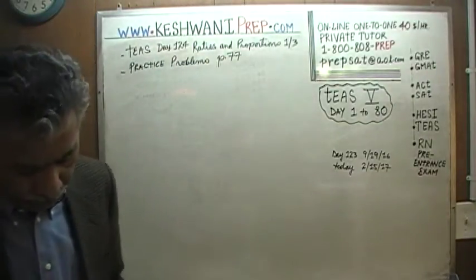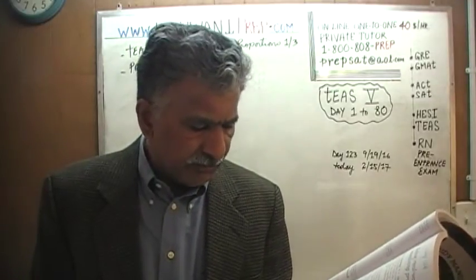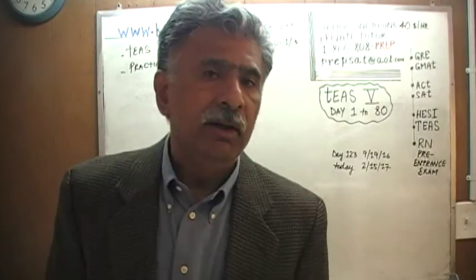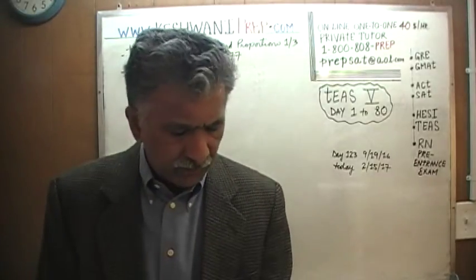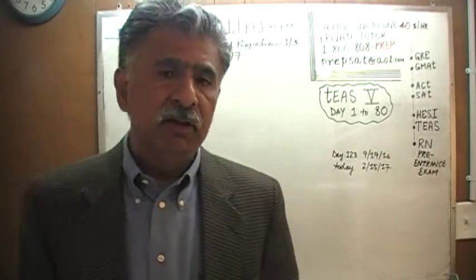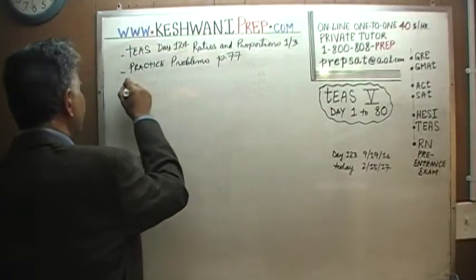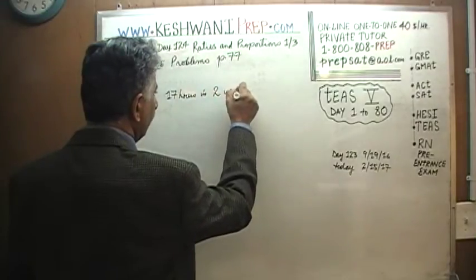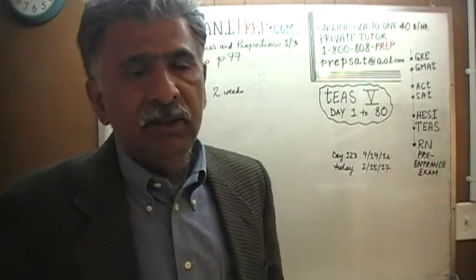On page 77, practice problem, the very first one — I can't read that name, so I'm just going to call him Michael. Michael has spent 17 hours in a two-week period practicing piano. He spent 17 hours practicing piano in a period of two weeks. The question is: if he is to continue at this rate, how many hours will he practice in five weeks? He practiced 17 hours in two weeks, but we want to find out how many hours he will practice at this rate in a five-week period.